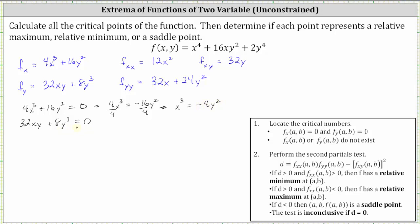Now let's solve the second equation for y cubed. Subtracting 32xy on both sides and then dividing both sides by eight gives us y cubed is equal to negative 4xy. So we now have the two equations: x cubed equals negative 4y squared, and y cubed equals negative 4xy.